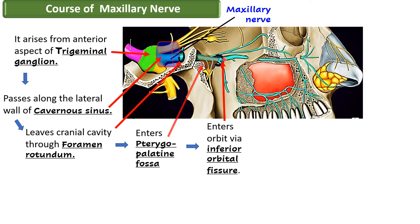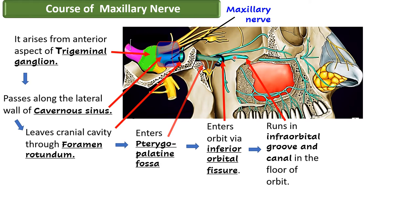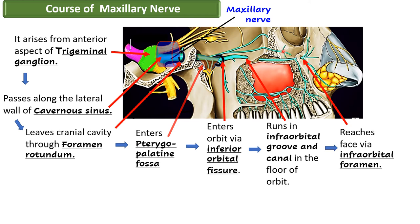The bone has been cut here — this is the maxillary air sinus. Now this nerve is called the infraorbital nerve. So the continuation of the maxillary nerve when it reaches the orbit is called the infraorbital nerve. When it runs in the floor of the orbit, it first runs in a groove known as the infraorbital groove; later that groove is converted into a canal, the infraorbital canal. Finally the nerve emerges on the face by passing through an opening just below the orbit known as the infraorbital foramen.